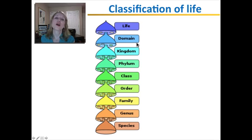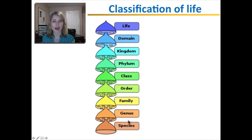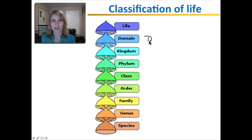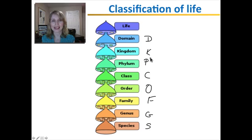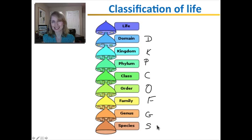How are you going to remember domain, kingdom, phylum, class, order, family, genus, species? I'll teach you a mnemonic my biology teacher taught me: 'Dear King Philip came over for good spaghetti.' Domain, kingdom, phylum, class, order, family, genus, species. That's not too bad, right?